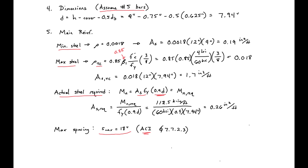Our area of steel required must be greater than 0.19, less than 1.7, and greater than 0.26 inches squared per foot. We're going to choose a bar size closest to our AS required. We'll use a number 5 bar, which has an area of 0.31 inches squared. We'll use this in our next step.